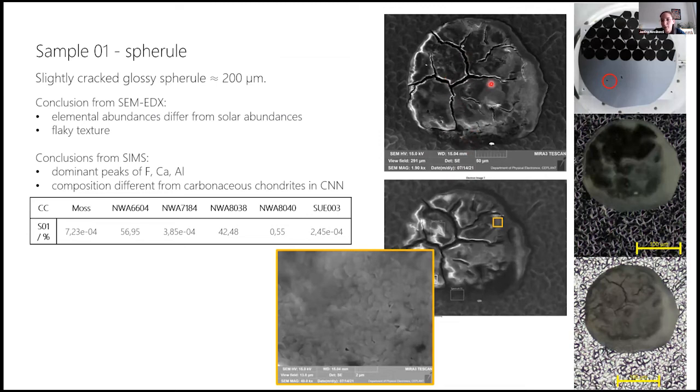So the first spherule was 200 micrometers in diameter, glossy or cracked spherule. But from the SEM-EDX analysis we saw abundances that differed from solar abundances. We also saw on the SEM microscope that there is a flaky structure which is not very common for these spherules.